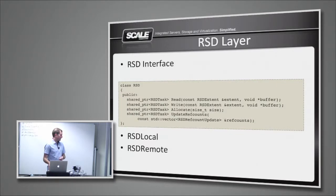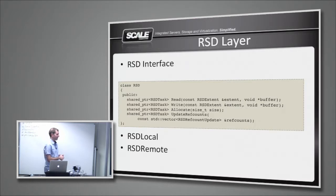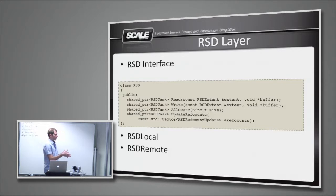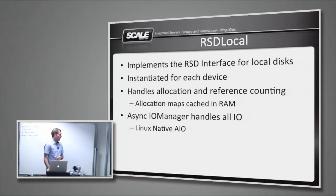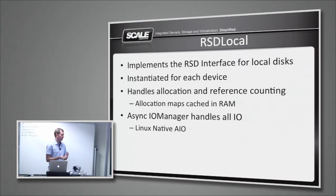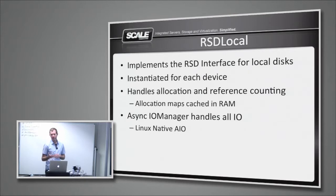There are two implementations within the RSD layer that both provide the exact same interface. The simple operations are: read, write, allocate space, or update reference counts. Reference counts are what implement snapshotting and cloning. RSD local is responsible for talking to local disks. Each device has one of these objects instantiated — this is what actually handles all allocation and reference counting. We cache allocation maps in RAM, so any allocation or copy-on-write check is an in-memory lookup, giving very low latency. RSD local is also the component issuing all IO to the Linux kernel via the Linux native AIO interface.